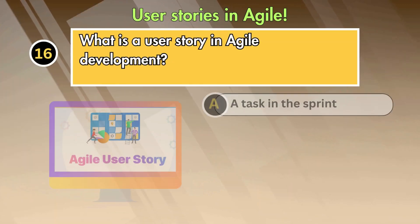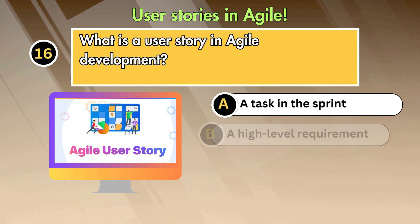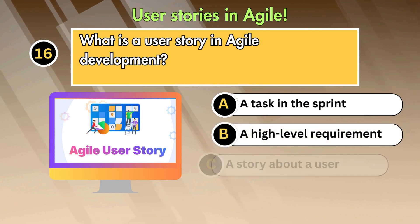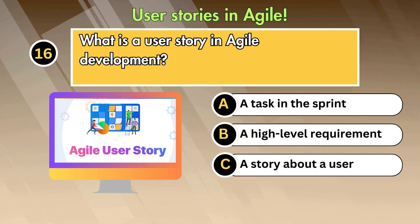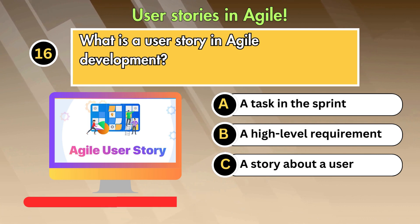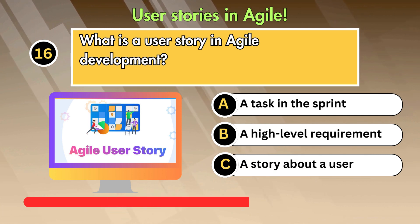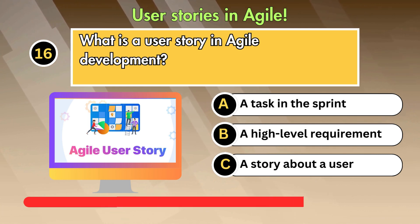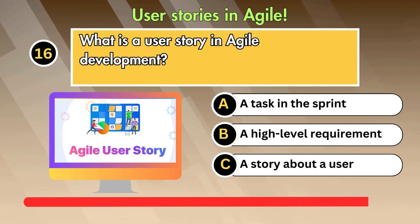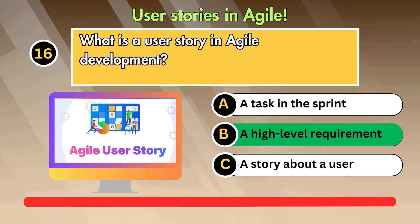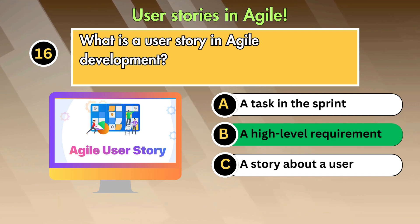Question 16: What is a user story in Agile development? Option 1: A task in the sprint. Option 2: A high-level requirement. Option 3: A story about a user. Answer is: A high-level requirement.